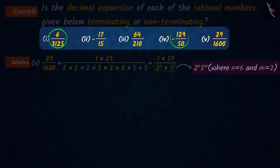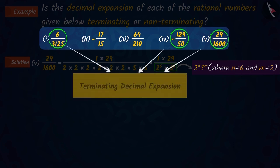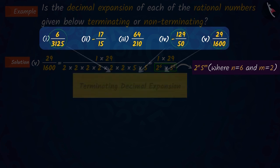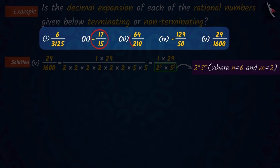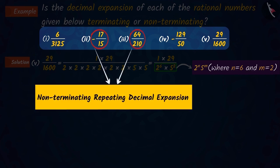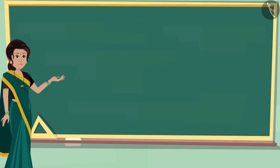So, the decimal expansions of the first, fourth and fifth rational numbers will be terminating. And the decimal expansions of the second and third rational numbers will be infinitely recurring, i.e., non-terminating.